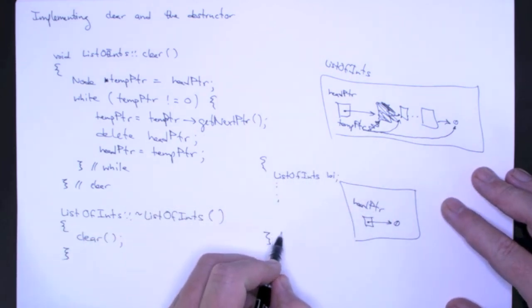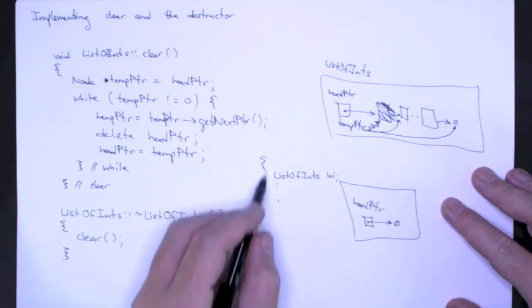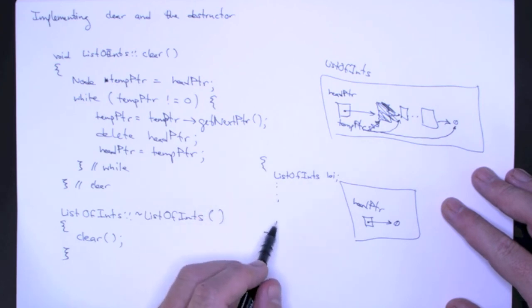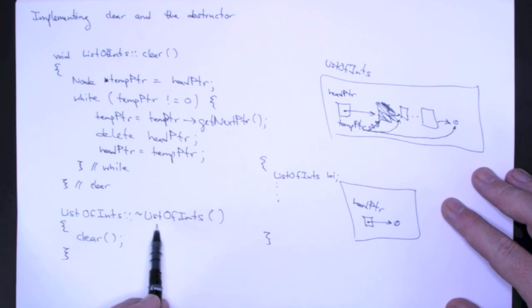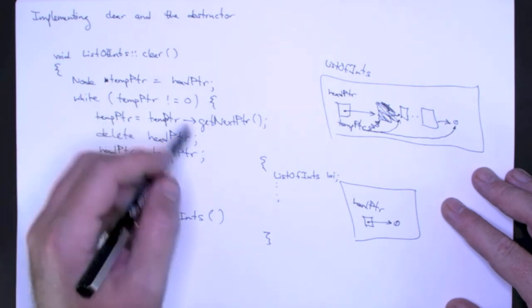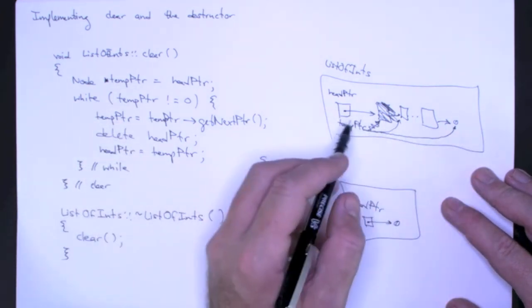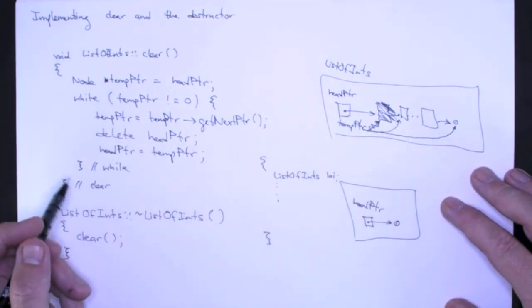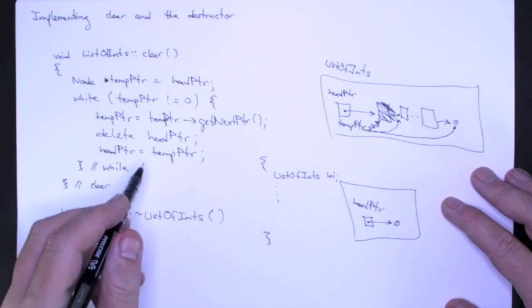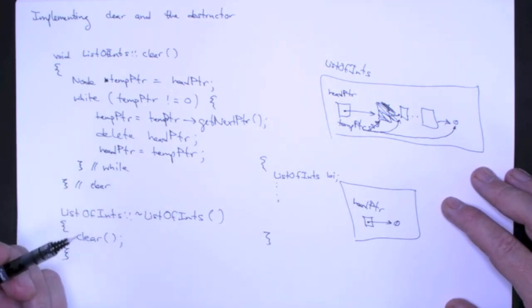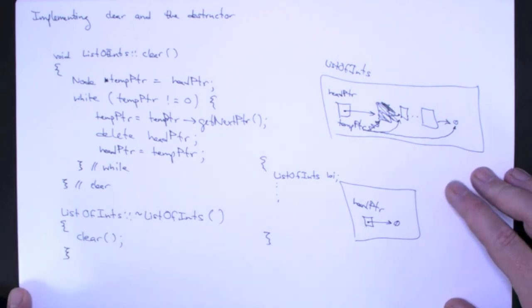Well at this point, the destructor, as you know, when we leave the scope of this block, the runtime environment automatically calls this destructor. The destructor calls the clear method, and the clear method traverses this list and deletes every node. And what you can do is type this in, run valgrind, and it will show you that we deallocated all of the nodes of the list when we get to the end of this block.